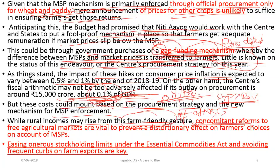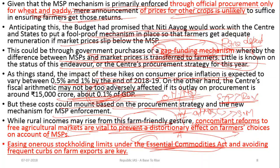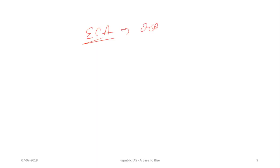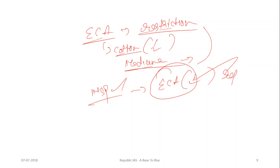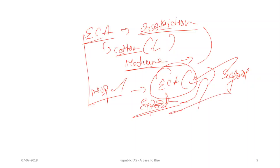With higher MSP, rural incomes may increase and a farmer-friendly atmosphere can be created. However, the government must simultaneously implement other reforms: the Essential Commodities Act needs to be reformed, because if a product is listed under it, procurement and stocking are limited. Also, export-based curbs should be minimized so that more procurement happens and farmers get better remuneration.